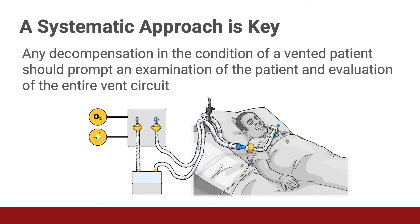Any decompensation in the clinical condition of the patient should prompt an immediate examination of both the patient and the ventilator system. The examination should prioritize the cardiopulmonary parts of the exam and the entire ventilator circuit — tracing from the wall oxygen and power sources through the ventilator itself and following the tubing to the patient. Check the tubing for occlusion or kinking. The endotracheal tube should be checked to assure the balloon is inflated and the tube is secured in place. It's always a good idea to document where the tube is located, such as 23 centimeters at the lips, to know if the tube may have been dislodged or moved.